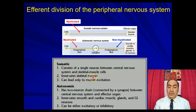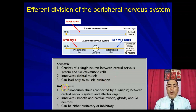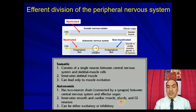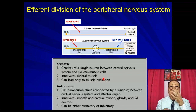The somatic neuron consists of a single neuron between the CNS and the effector organ — the skeletal muscle. It can only cause muscle excitation; if there is no excitatory stimulus, the muscle simply relaxes. The autonomic neuron has a two-neuron chain connected by a ganglion, innervating smooth muscle, cardiac muscle, glands, and GI neurons. It can be excitatory or inhibitory — for example, muscarinic neurons to the heart are inhibitory, while sympathetic neurons to the heart are excitatory.